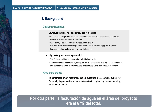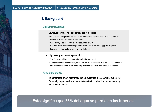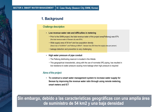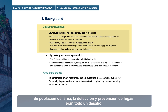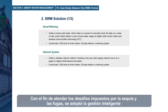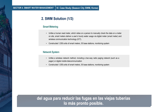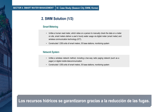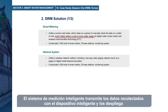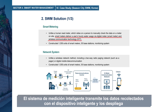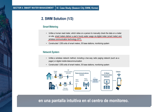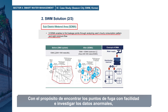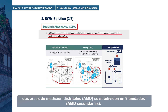Moreover, the total revenue water of the project area was 67%, meaning 33% was lost in the pipes. However, due to geographical characteristics — a wide supply area of 54 square kilometers and low population density — leakage detection and prevention were very challenging. In order to address these challenges, smart water management was adopted to reduce leakage in aged pipes as soon as possible. The smart metering system transmits collected data from smart devices and displays the data on a user-friendly display in the monitoring center. The two existing District Metering Areas, DMAs, were subdivided into 9 sub-DMAs.